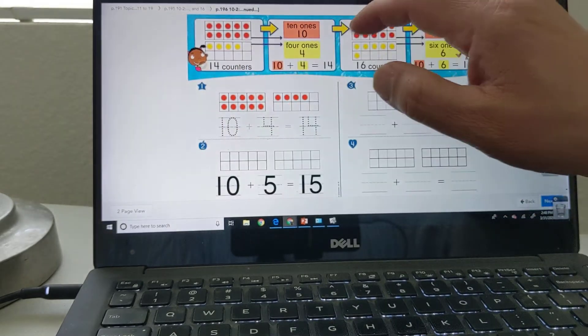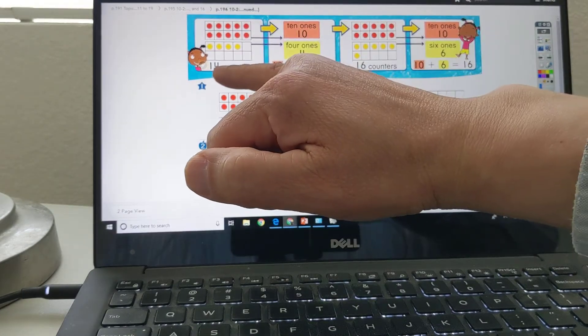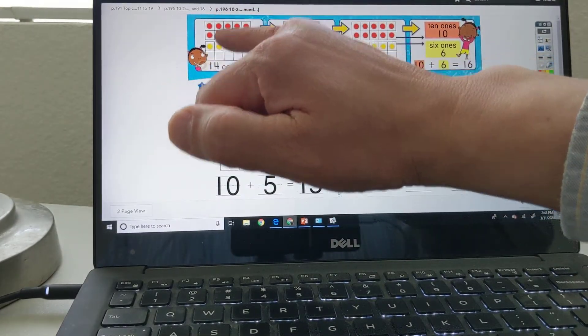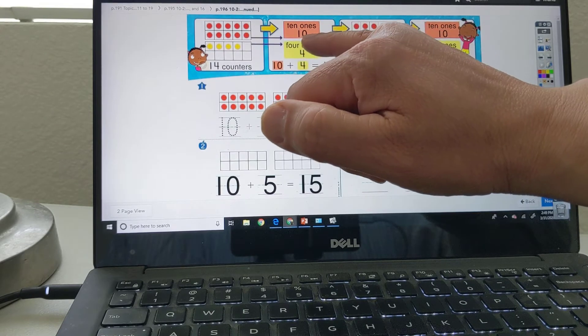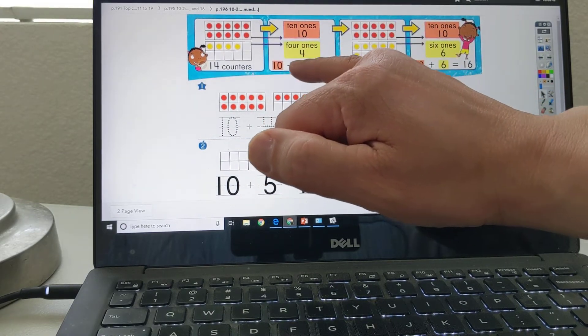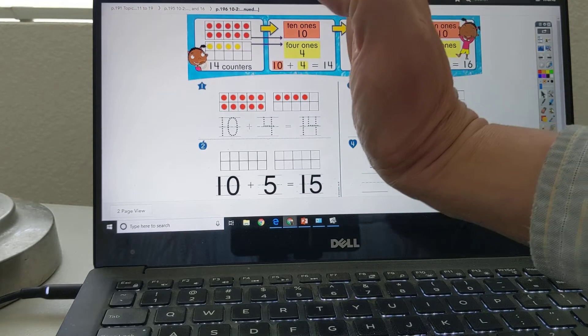So actually, it's more like this. 14 counters. There's 10 plus 4. 10 ones, 10. 4 ones, 4. 10 plus 4 is equal to 14. So that's right there.